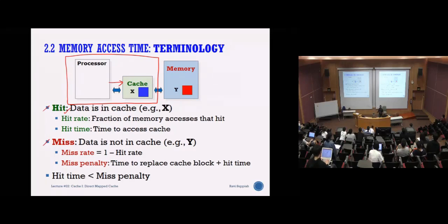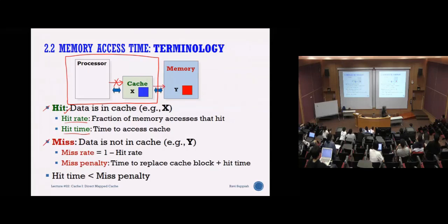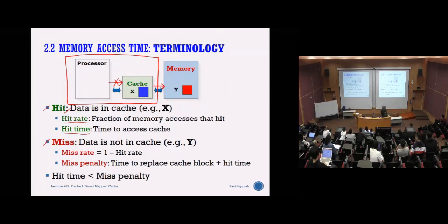If you try to access data and realize it is not in the cache, that is a miss. Then you need to read from memory. There are a few different strategies for handling read and write on a miss. The whole idea: if the data is in the cache it's a hit; if not, it's a miss and you need to read from memory.